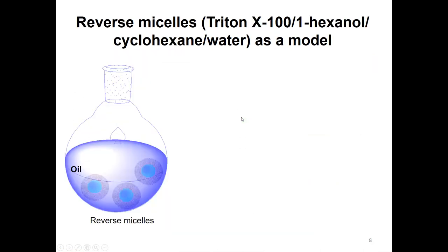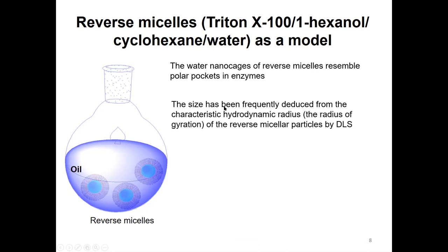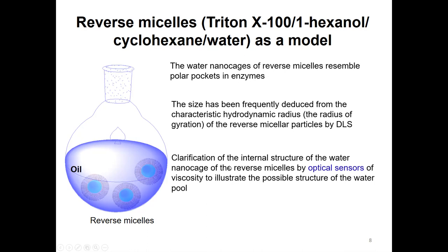So we can use the silver nanodots to detect the nanocage in protein. Before we do that, we use a model system: the reverse micelle. A reverse micelle is water-in-oil, separated by a surfactant. The water nanocage of the reverse micelle resembles the polar pockets in enzymes. People use it as a model. But to understand those water pools, people typically characterize the whole particle — the reverse micelle — by DLS, or put some optical sensor inside to sense the viscosity of the water phase, but it's not direct.